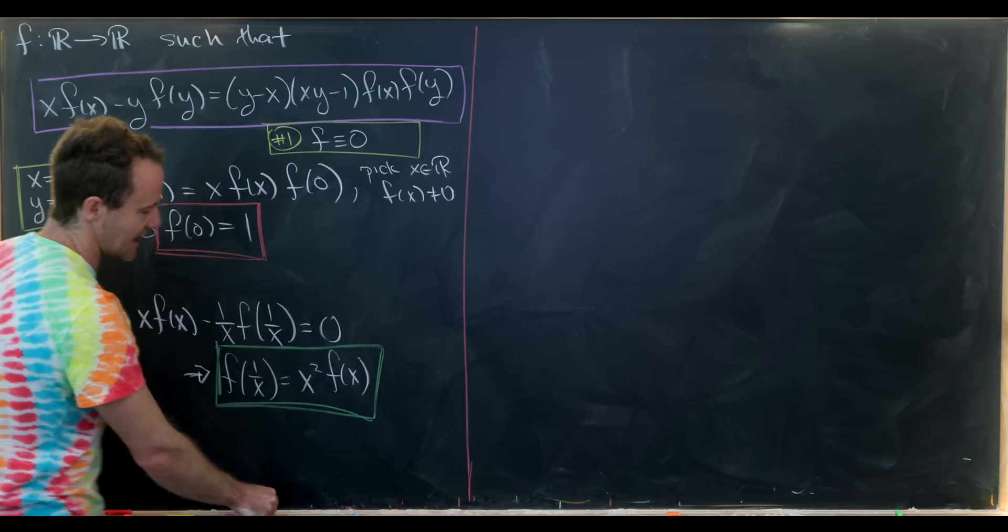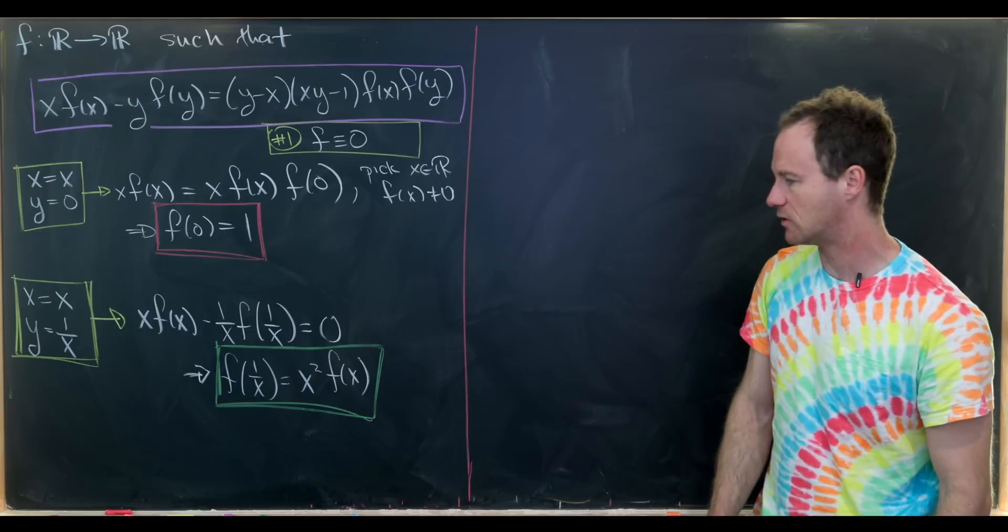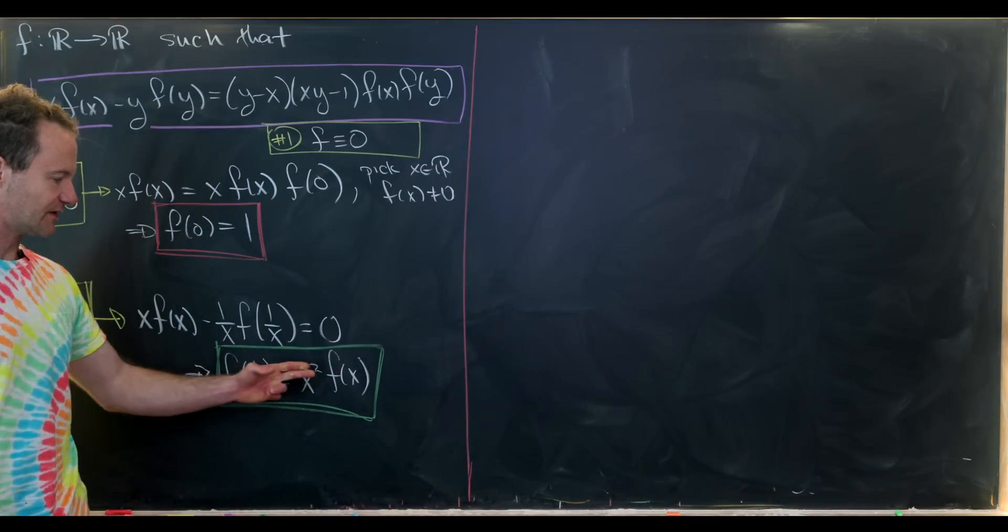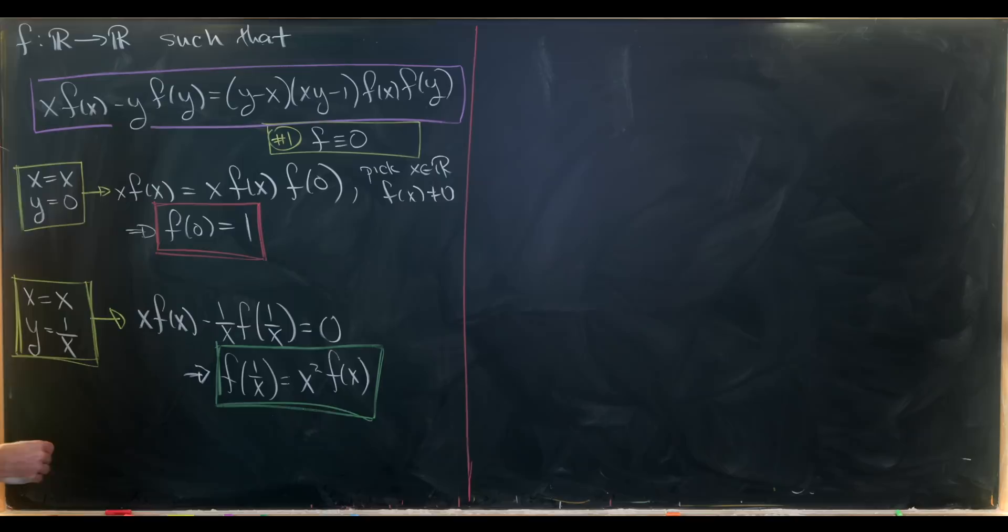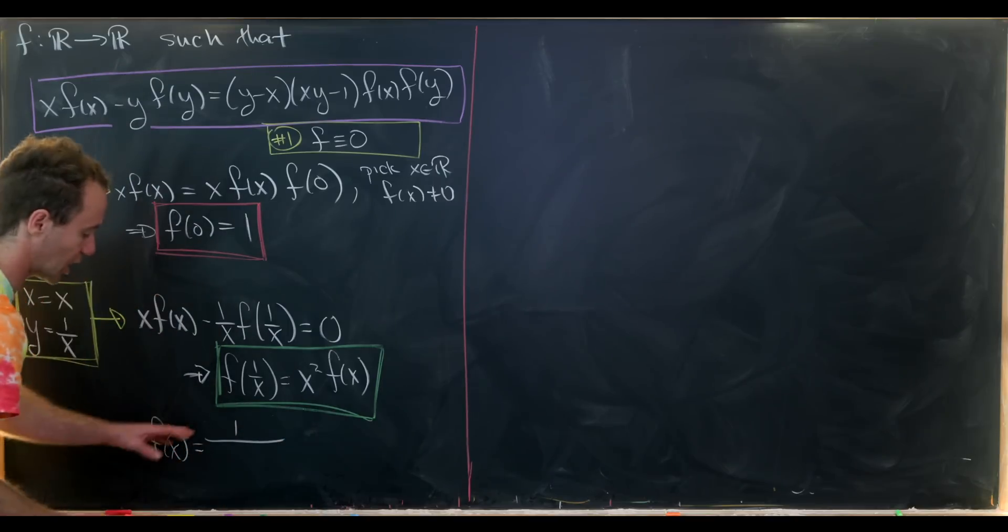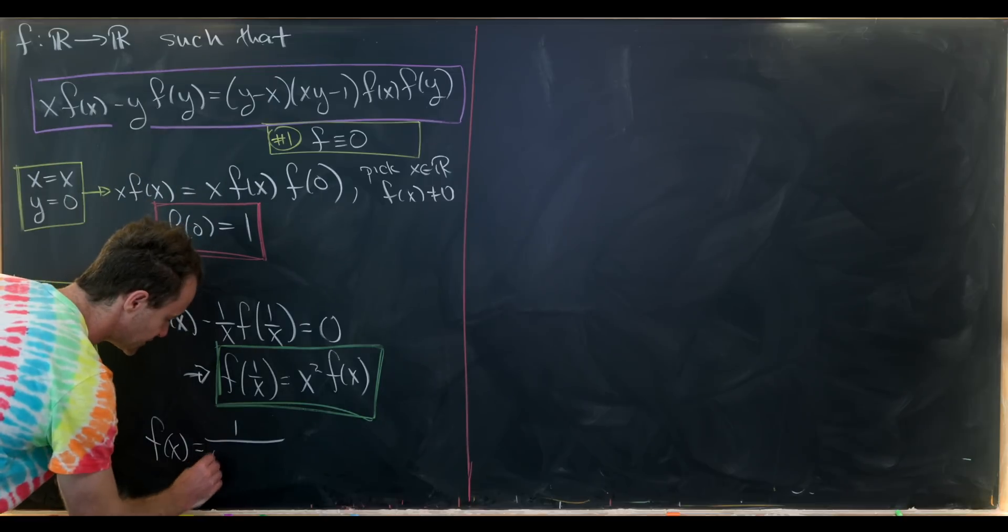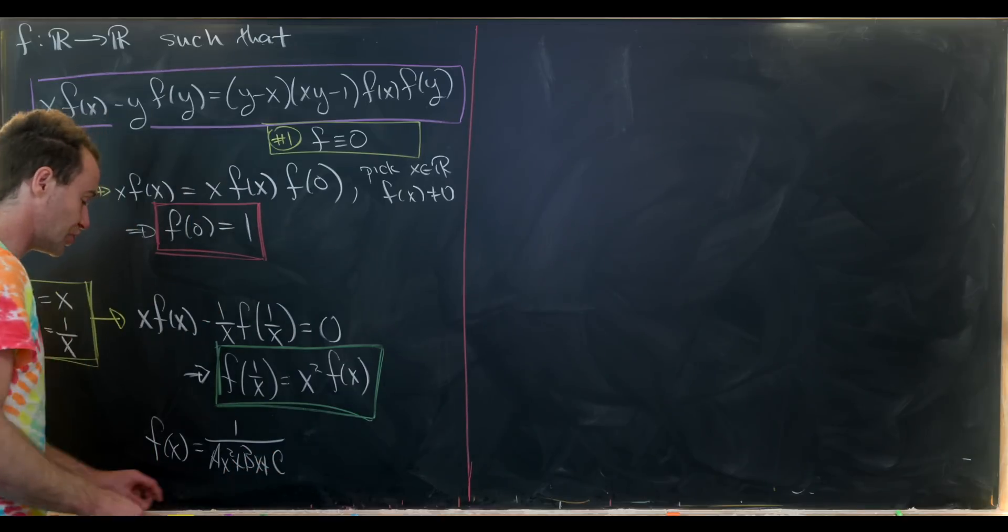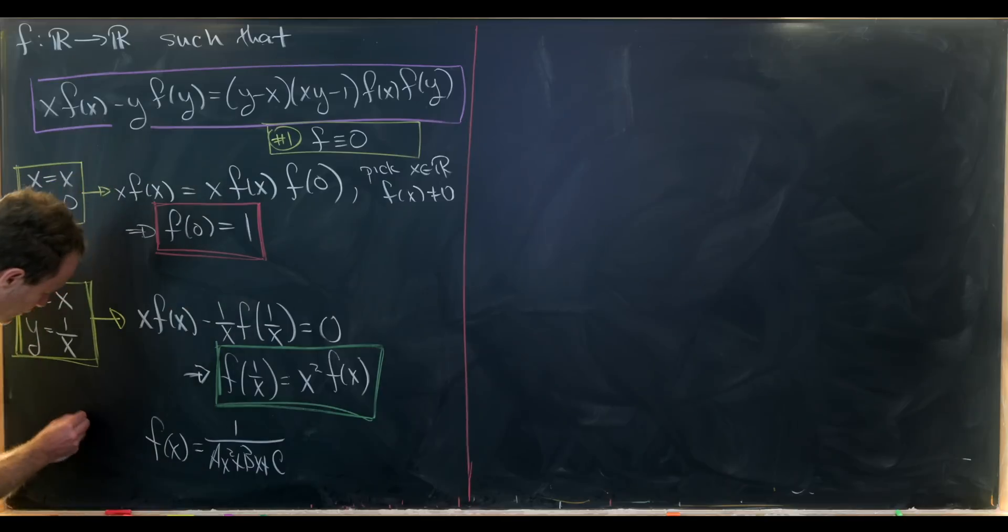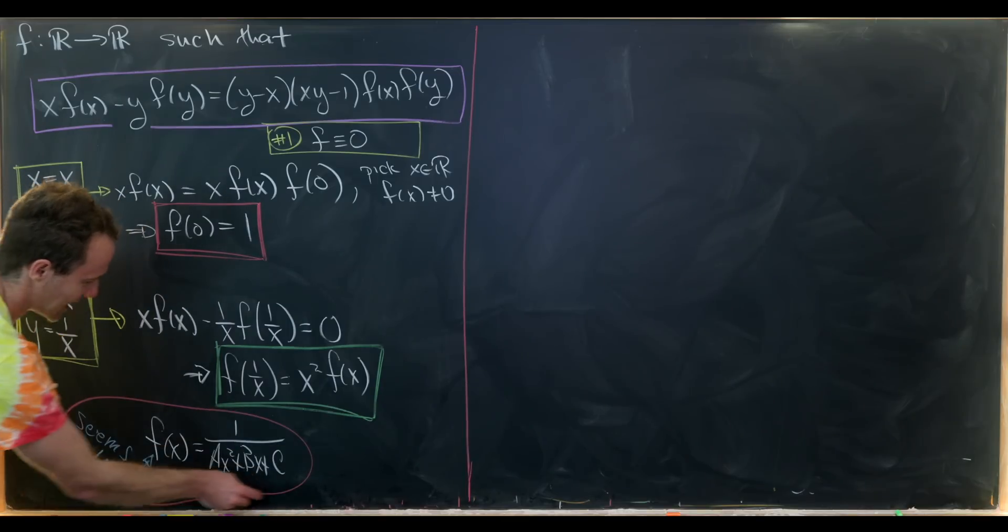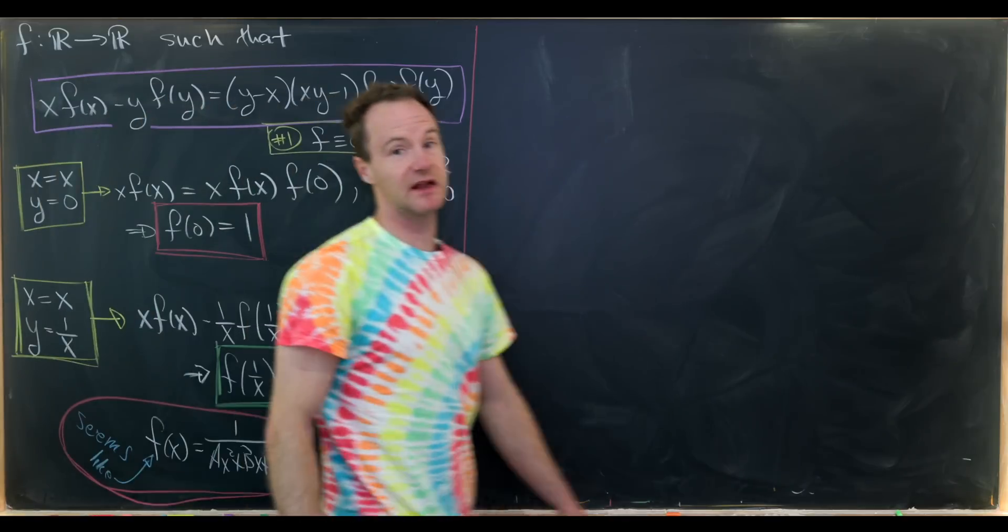That actually gives me a hint as to maybe what the final picture looks like. Because there's a kind of standard family of functions that satisfies this type of rule, and that would be f(x) equals 1 over a quadratic polynomial in x. So I'll write this as Ax²+Bx+C. It seems like maybe we'll write that here, but that's not a huge restriction here.